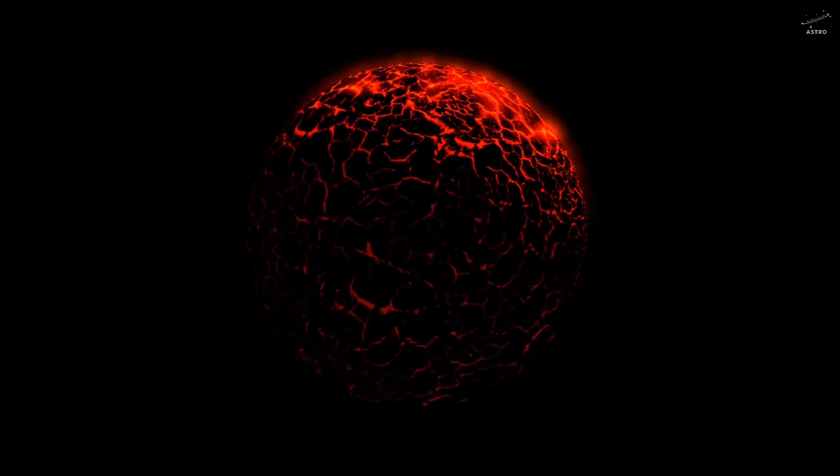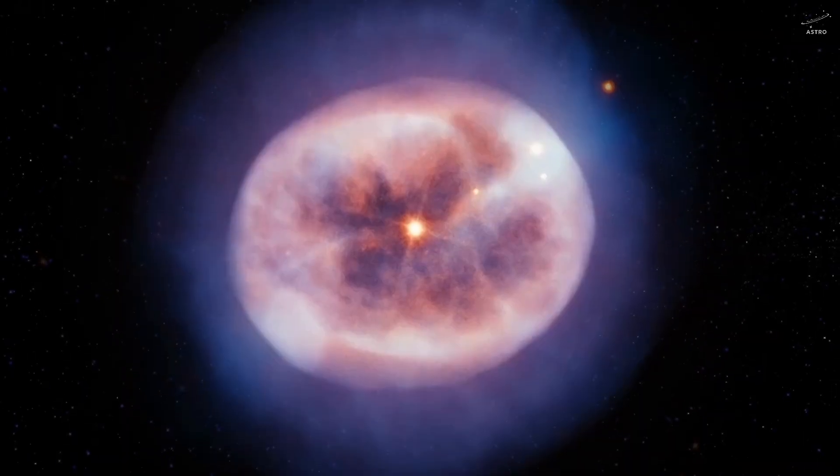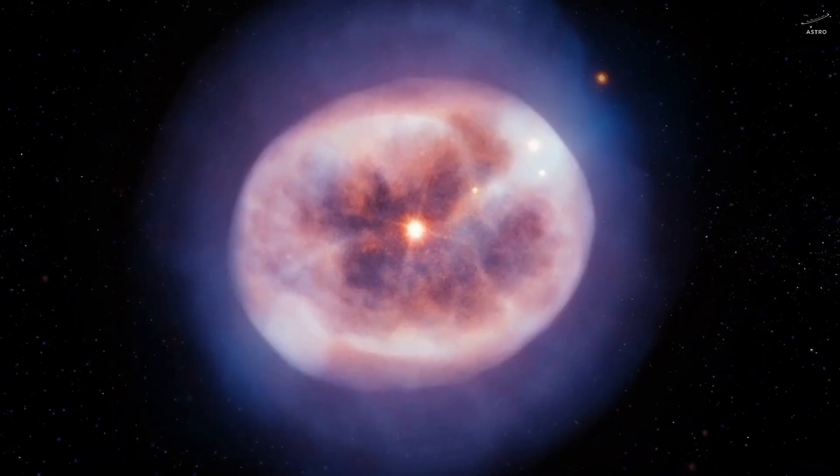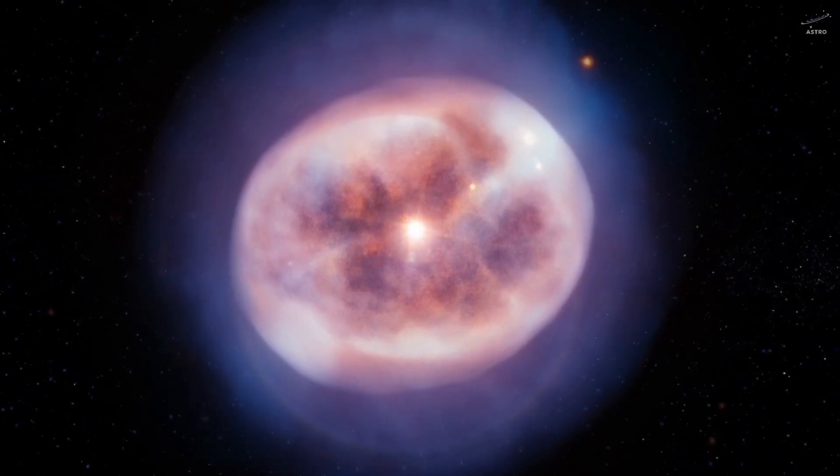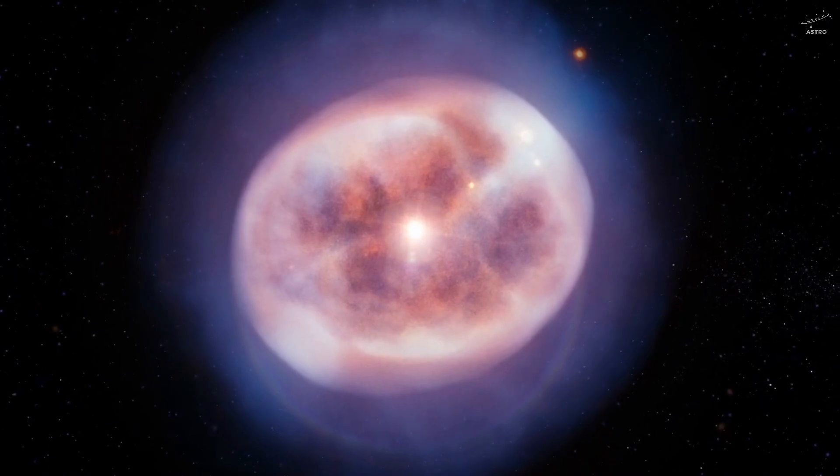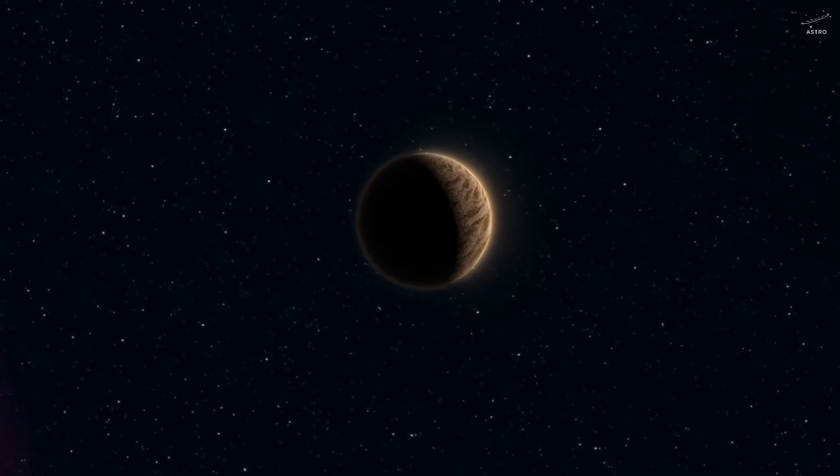At that point, gravity quietly takes over, pulling the core inward. The sun's outer layers? They're blown away, forming a glowing planetary nebula. A shimmering shell of gas glittering in the darkness of space. Fast forward a few billion years, and all that remains is a white dwarf.